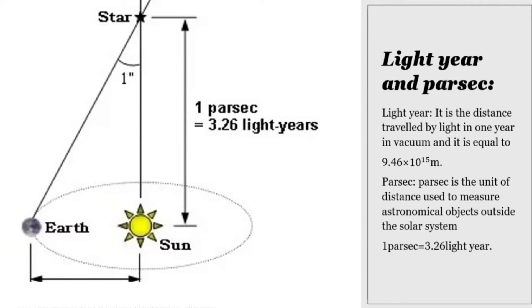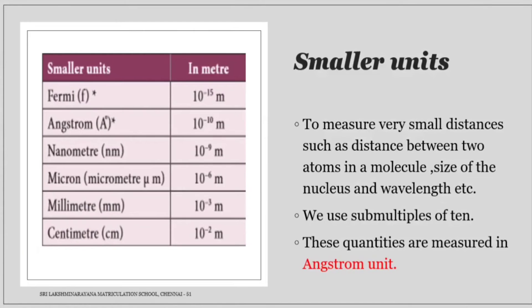Parsec is the unit of distance used to measure astronomical objects outside the solar system. 1 parsec is equal to 3.26 light years. To measure very small distances such as distance between two atoms in a molecule, size of a nucleus, and wavelength, we use sub-multiples of meter. These quantities are measured in angstrom unit. For example: Fermi 10^-15 meter, angstrom 10^-10 meter, nanometer 10^-9 meter.